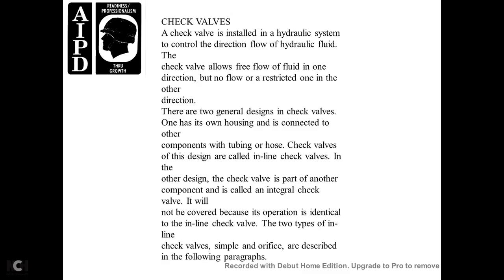Check Valve. A check valve is installed in the hydraulic system to control the direction of hydraulic fluid flow. The check valve allows free flow of fluid in one direction but restricts or blocks flow in the opposite direction. There are two general designs of check valves. One has its own housing connected to other components by tubing and hosing; these are called inline check valves. The other design, where the check valve is part of another component, is called an integral check valve. The two types of inline check valves are simple and orifice types.